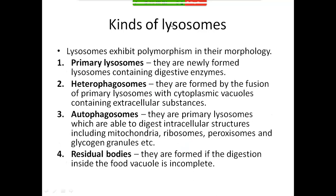Based on whether the lysosome is freshly formed or has fused with other vesicles, lysosomes are classified into four types. First, primary lysosomes — these are newly formed lysosomes containing digestive enzymes. Second, heterophagosomes — formed by the fusion of primary lysosomes from the Golgi apparatus with cytoplasmic vesicles containing non-functional cell organelles or food particles.